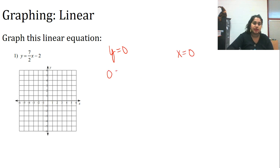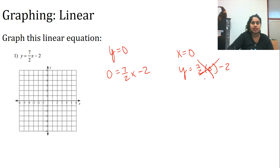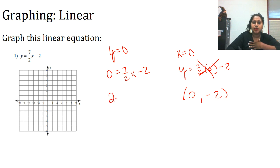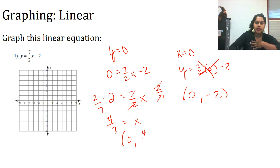Setting y equal to 0 gives us 0 = 7/2 x minus 2. Setting x equal to 0 gives y = 7/2 times 0 minus 2, so there is a point at (0, -2). Bringing the 2 over and multiplying by 2/7 gives x = 4/7, so there's also an intercept at (4/7, 0).